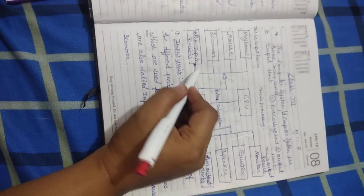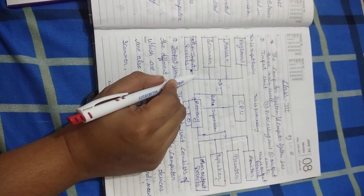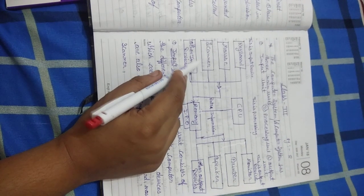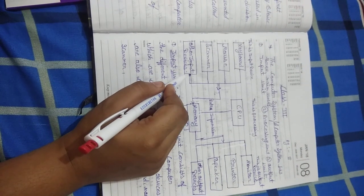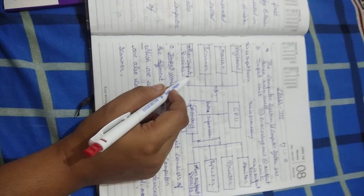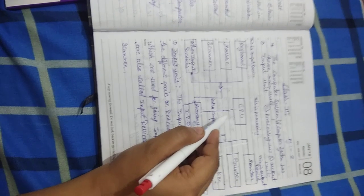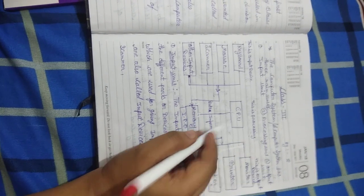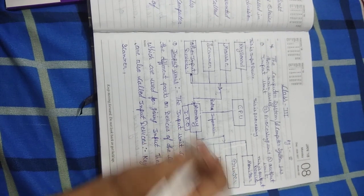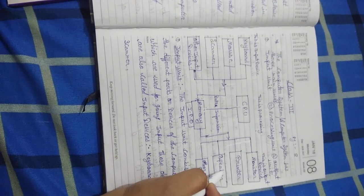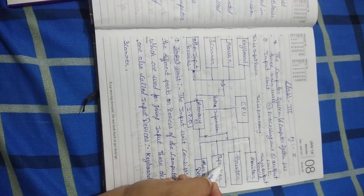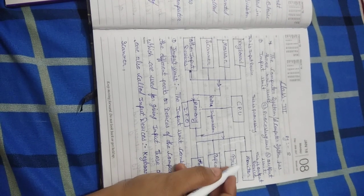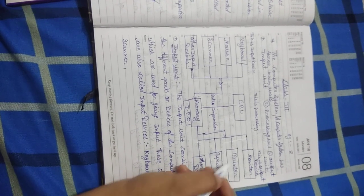Input device किसलिए use करते हैं? Input device किसी data या word को input करने के लिए use किया जाता है. Input होने के बाद processing होता है. Processing होने के बाद जो information होती है वो output में आती है. Output result शो करवाने का काम करता है, मतलब output provide करवाता है.